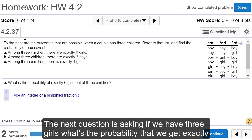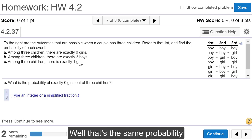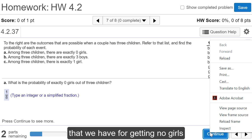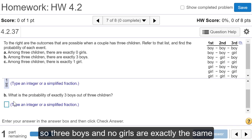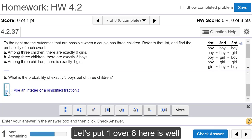The next question is asking what's the probability that we get exactly three boys. Well that's the same probability that we have for getting no girls. So three boys and no girls are exactly the same. Let's put one over eight here as well.